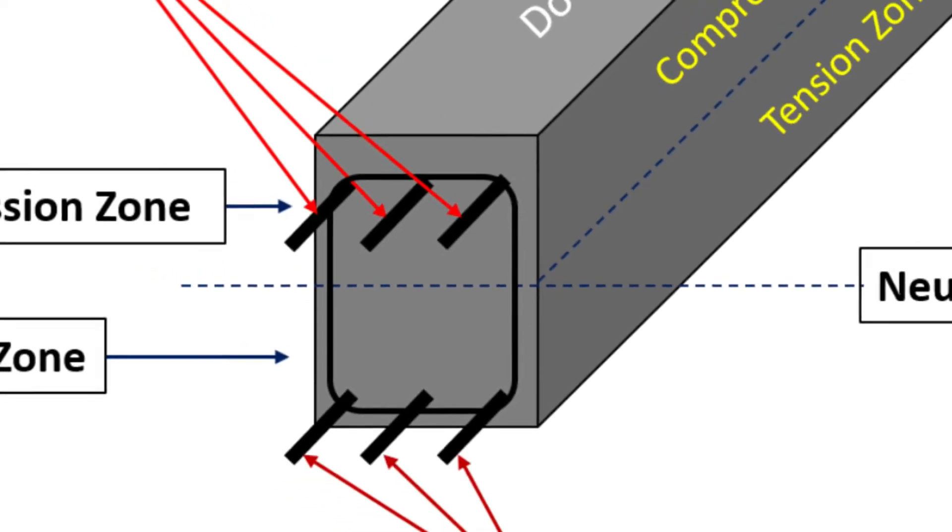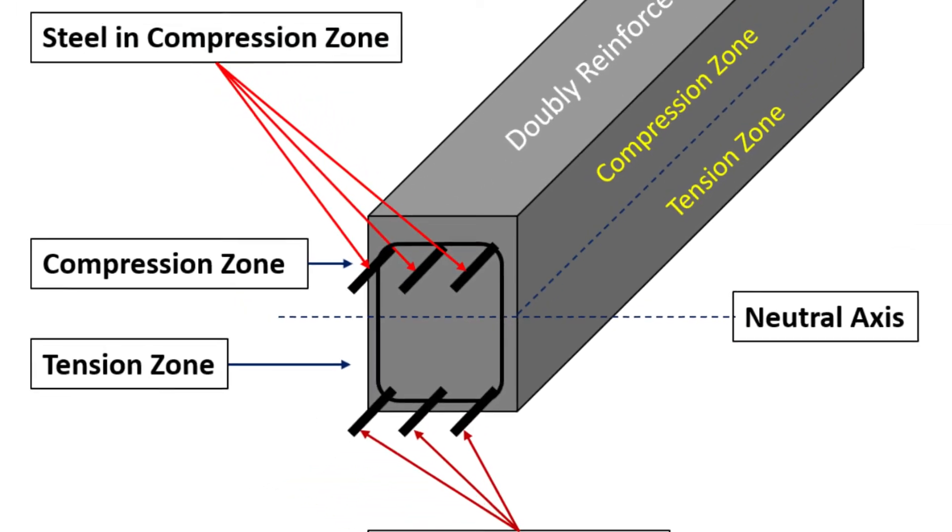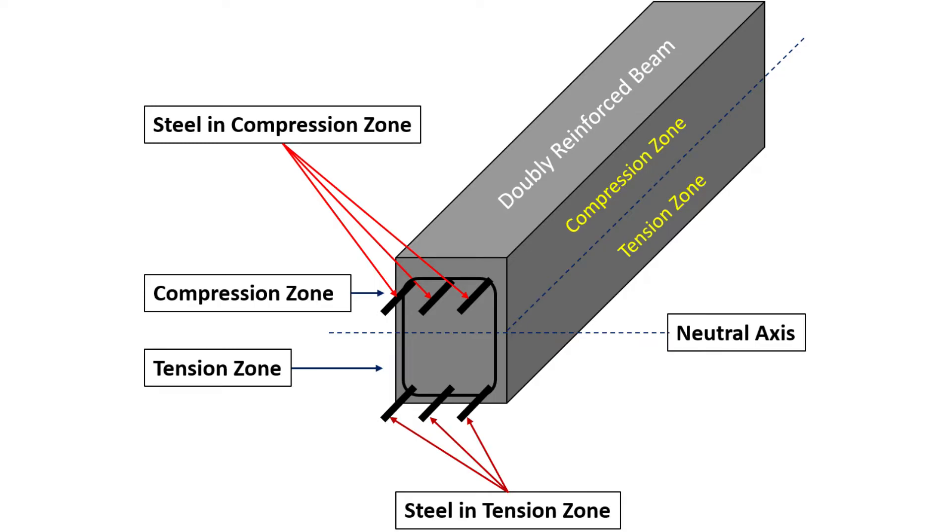Increasing the amount of steel only in the tension zone may not be sufficient to increase the moment of resistance. Thus, a doubly reinforced beam is adopted to increase the strength in beams with limited dimensions.